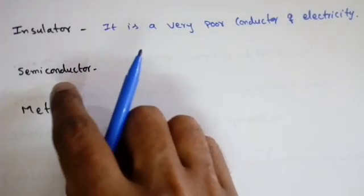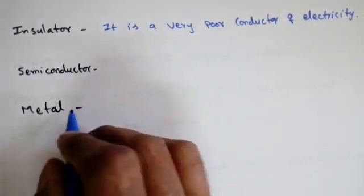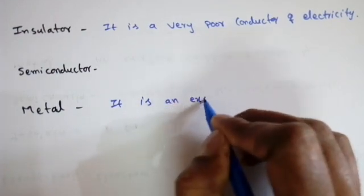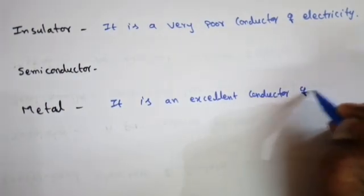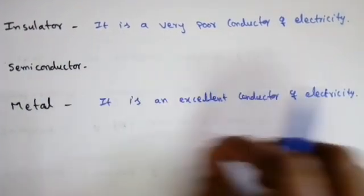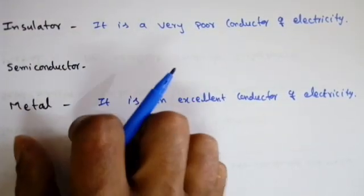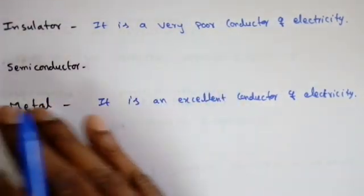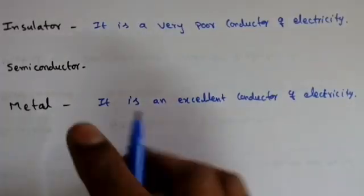Now, before we define a semiconductor we will define a metal. An insulator is a very poor conductor, whereas a metal is an excellent conductor of electricity. The moment we apply some electric field, the current starts flowing. There are so many electrons available in metals that the moment we apply some electric field, the electrons start moving and current starts flowing.